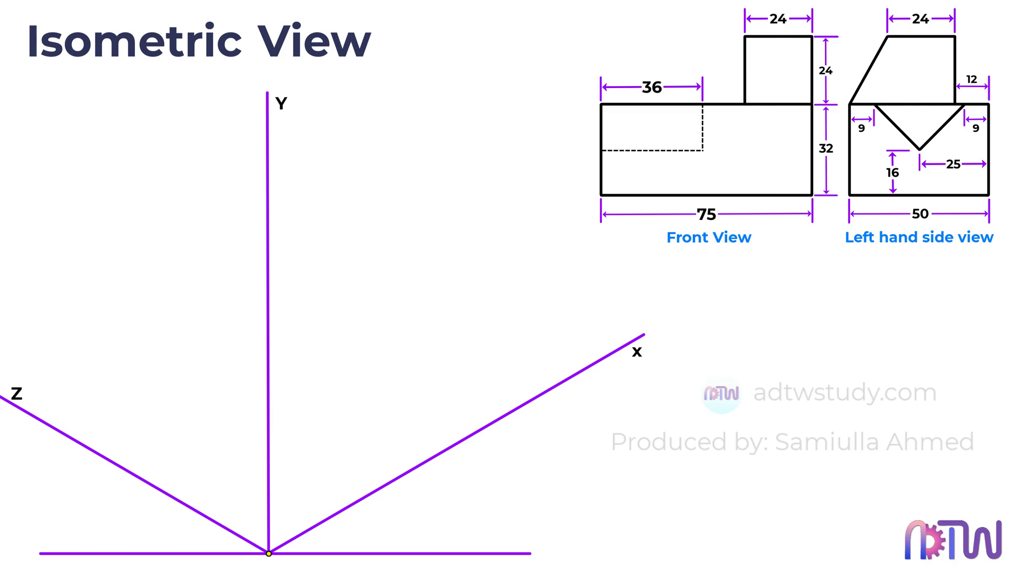Similarly, the width is established at 50 mm as indicated in the side view. Moreover, the height of the rectangular base is defined as 32 mm as shown here. With these dimensions in consideration, we are ready to create the outline for the base of the given object. Use a drafter and create the base outline as demonstrated.